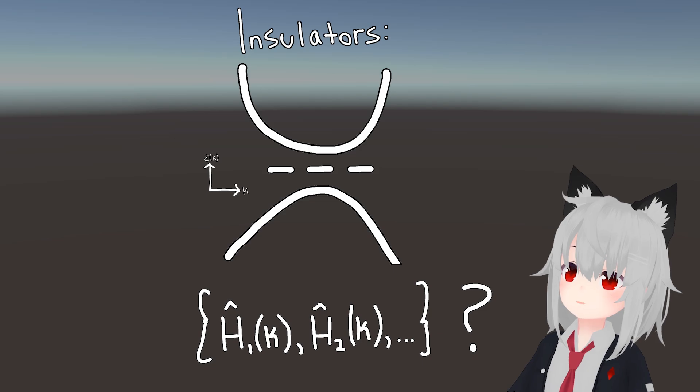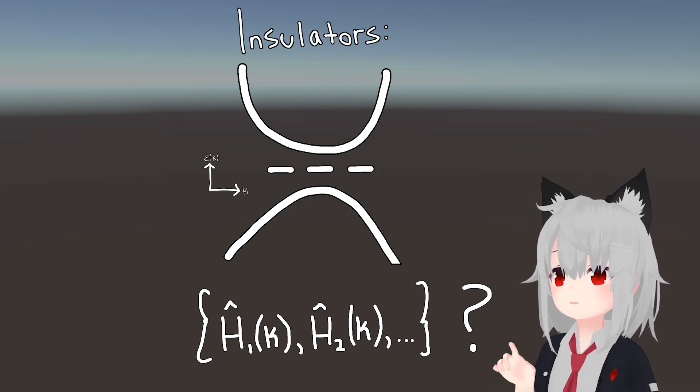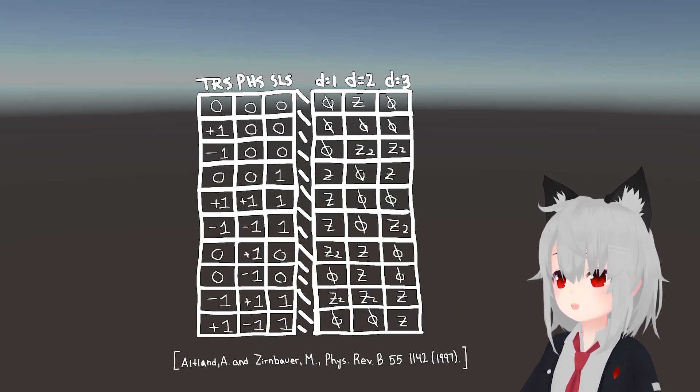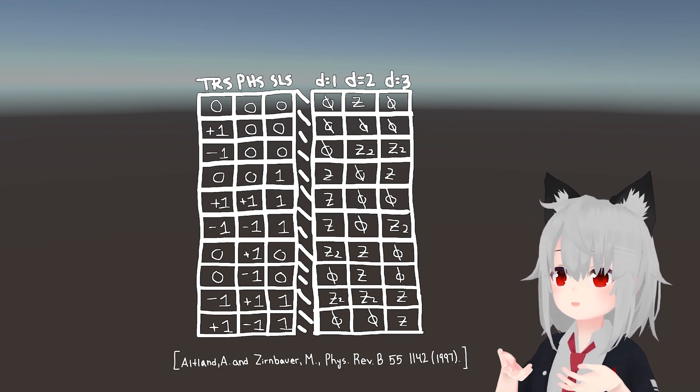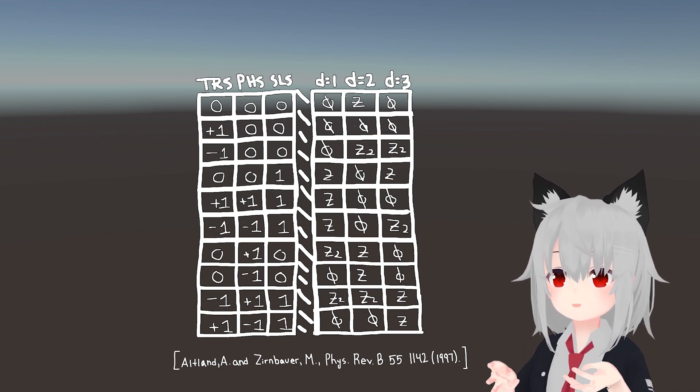Now, the answer to this question turns out to be not so obvious, but researchers have shown that you can get some idea about the nature of the topological invariant, assuming you know some basic information about the insulator.